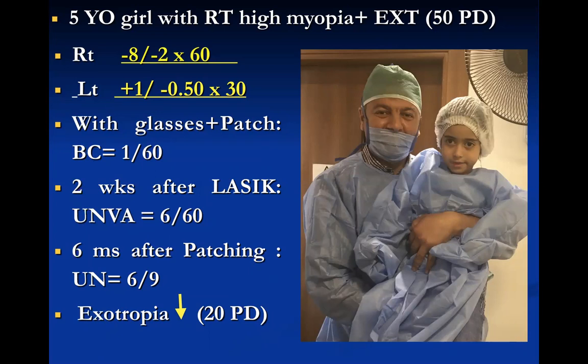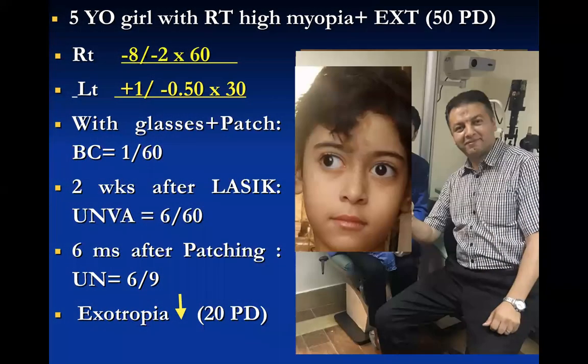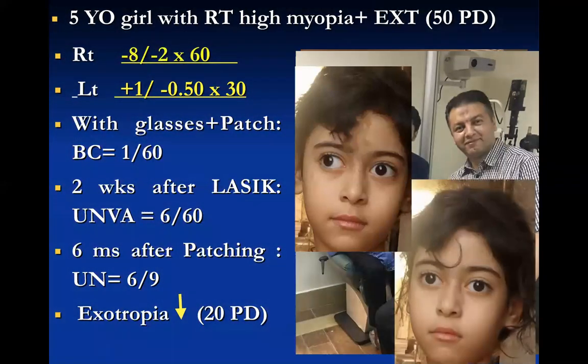The exotropia was almost corrected — reduced from 50 to 20 prism diopters after six months of laser vision correction and patching. As seen in the photos, the large angle of deviation in the pre-operative photo is almost corrected after six months. I plan to correct the remaining small angle with adjuvant squint surgery for a fine, orthophoric appearance and good vision.